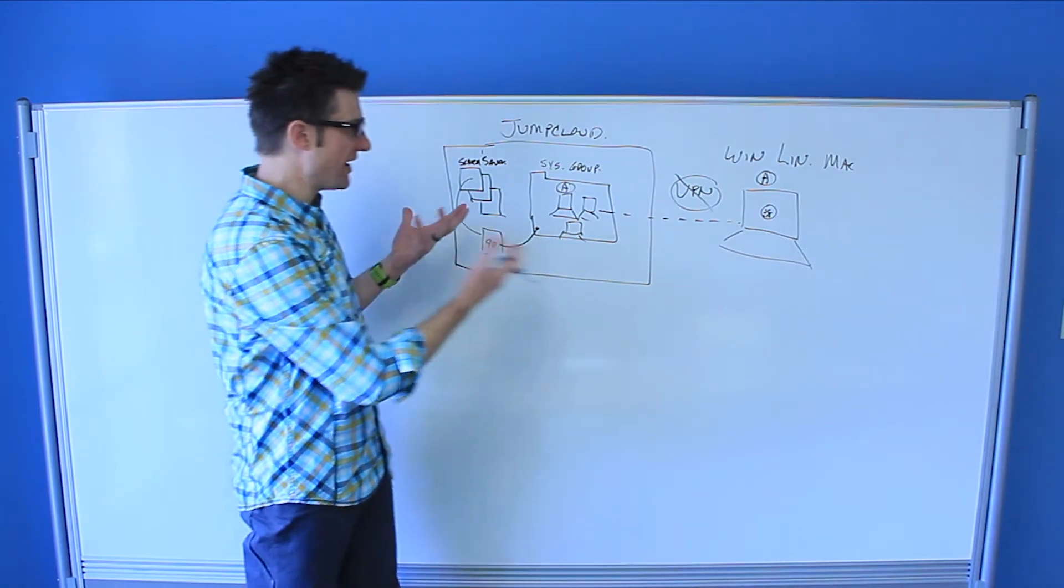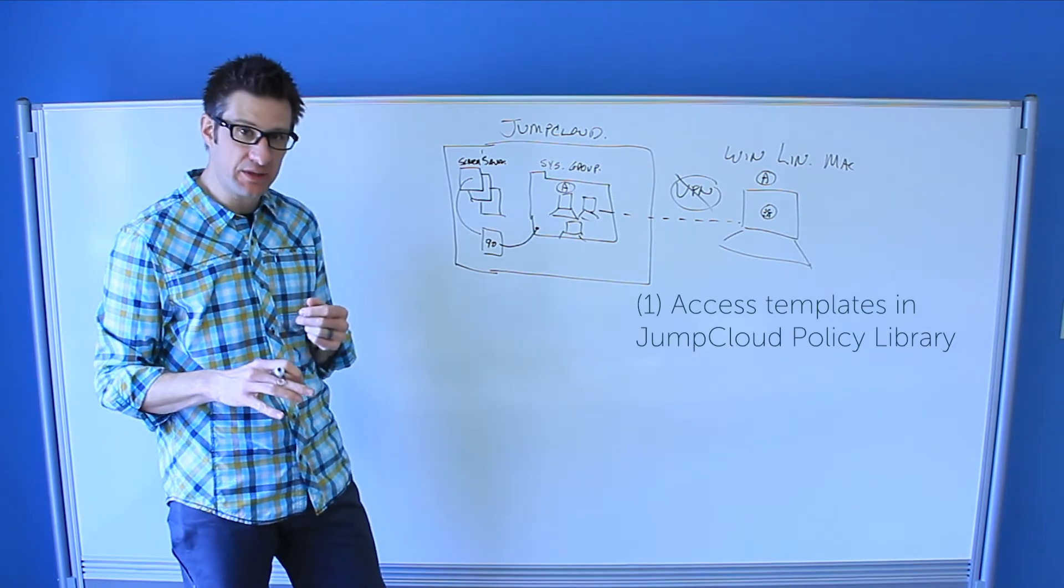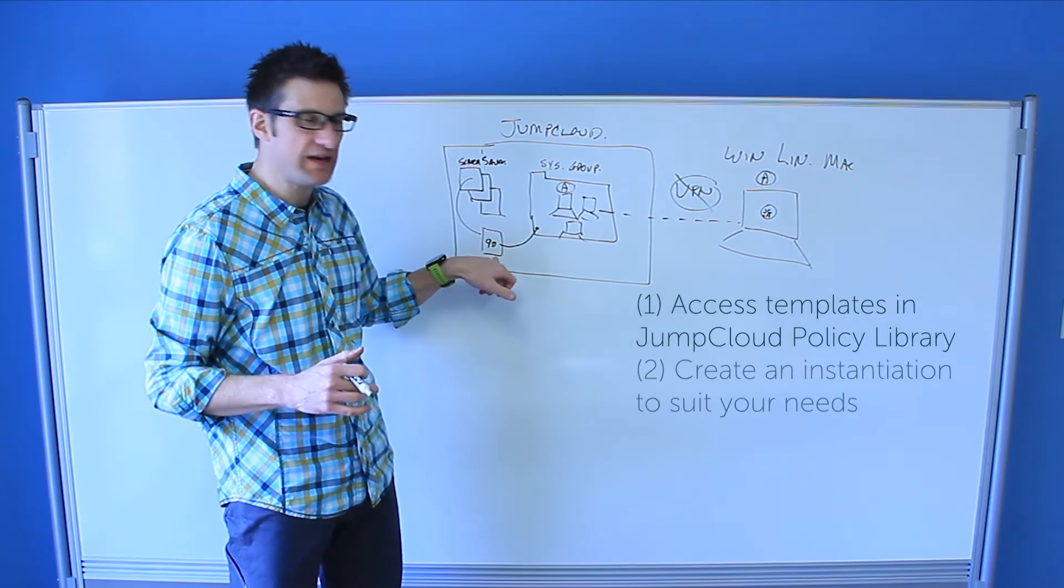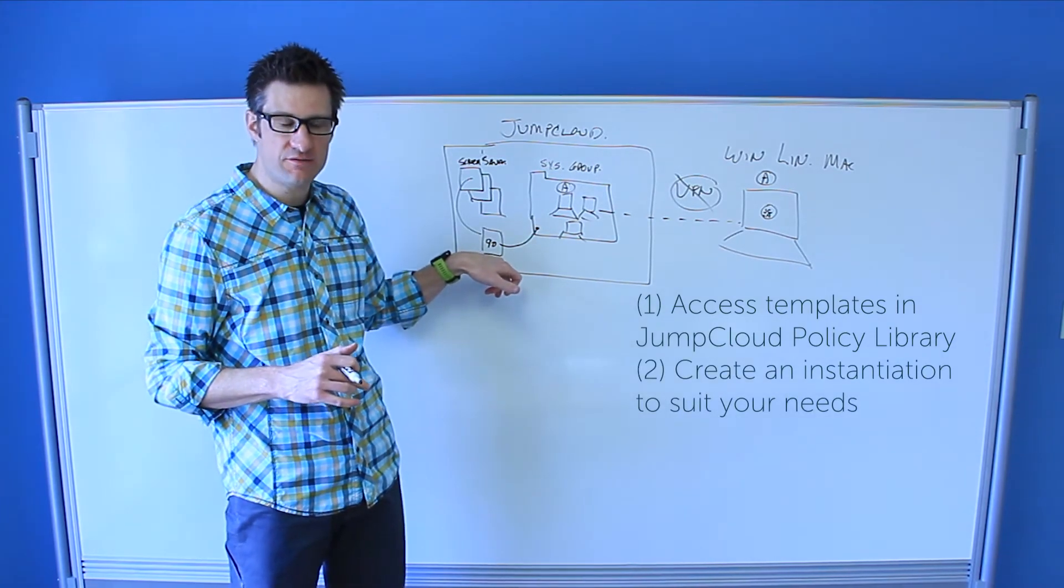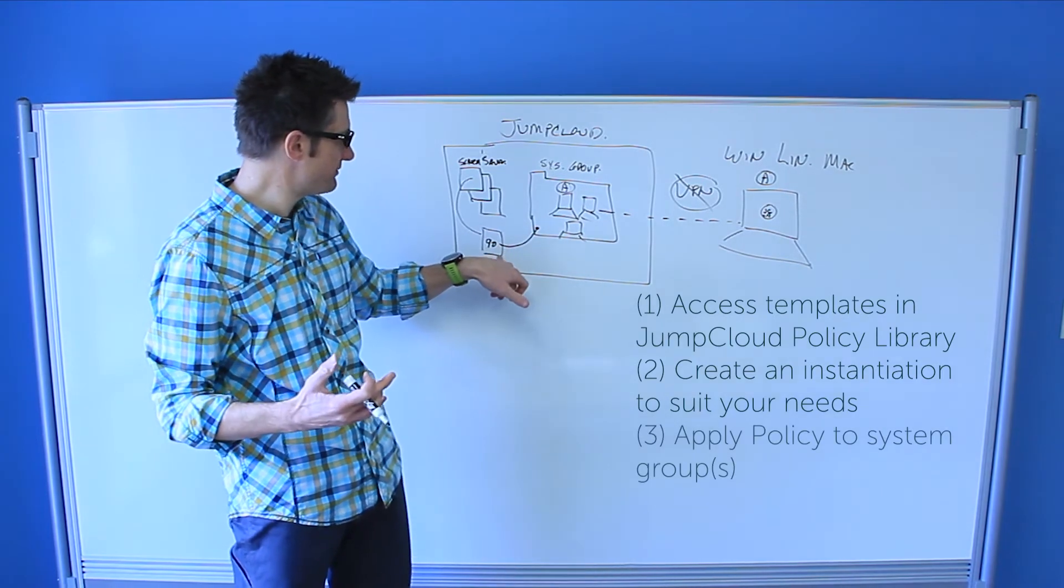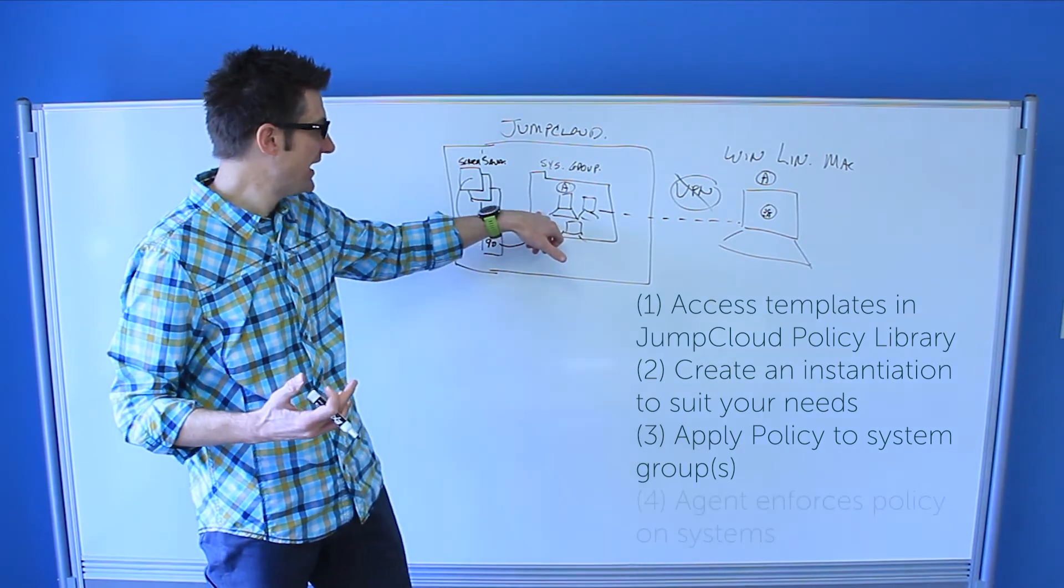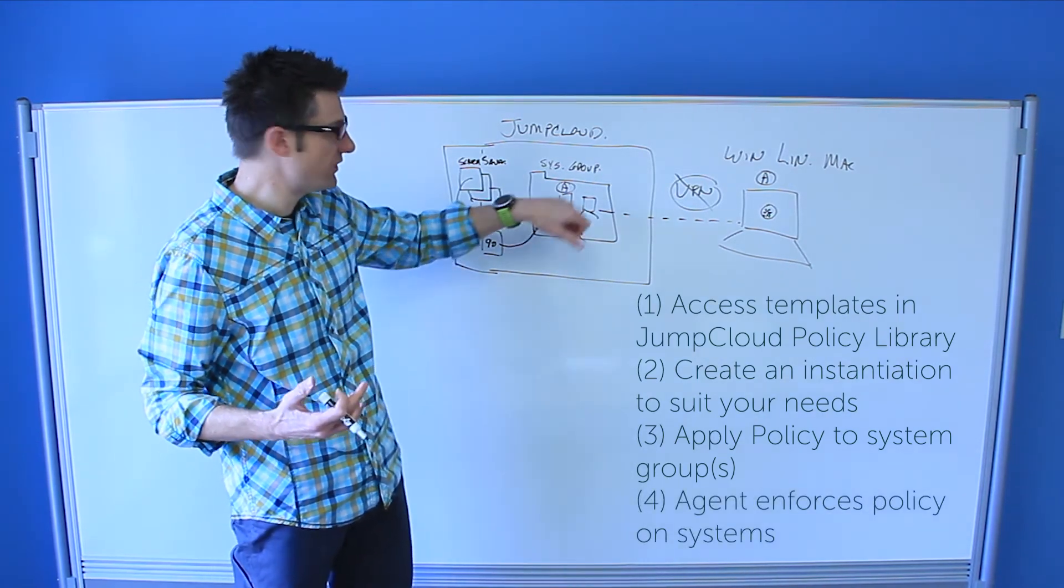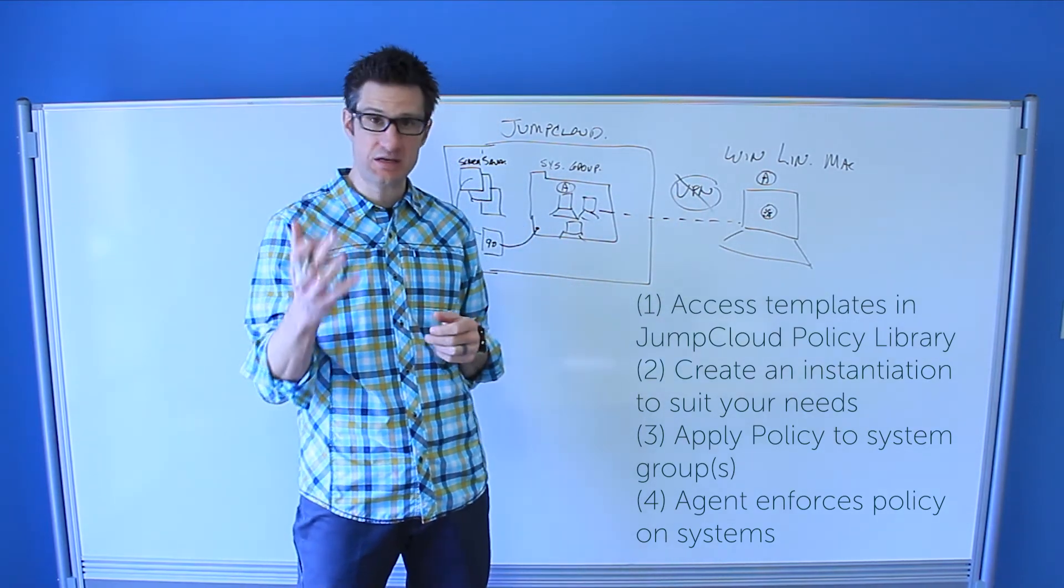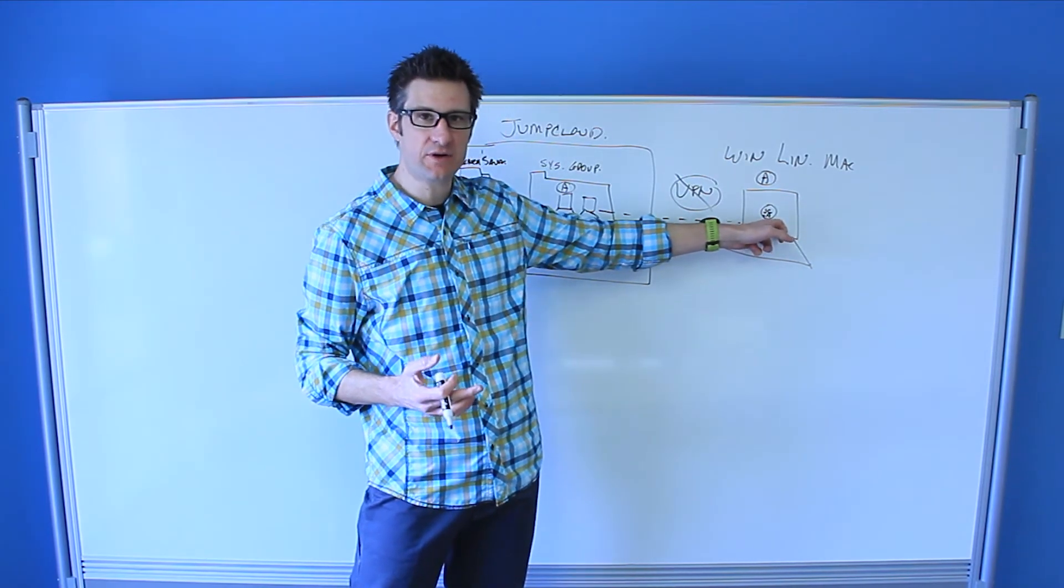So now you have an overlay of the land. Let's review. We give you a template or a series of templates in our policy library. You then create an instantiation of the desired template into your own pattern. You apply that policy pattern to a system group or many system groups.